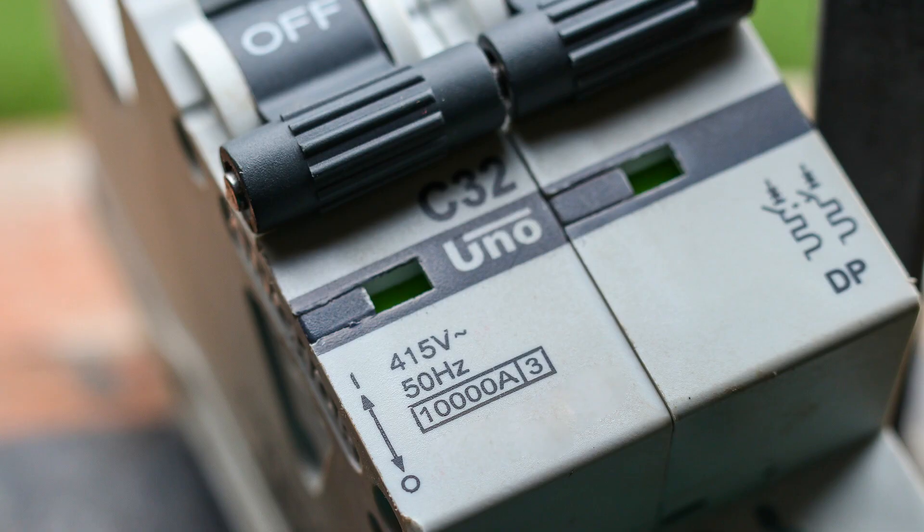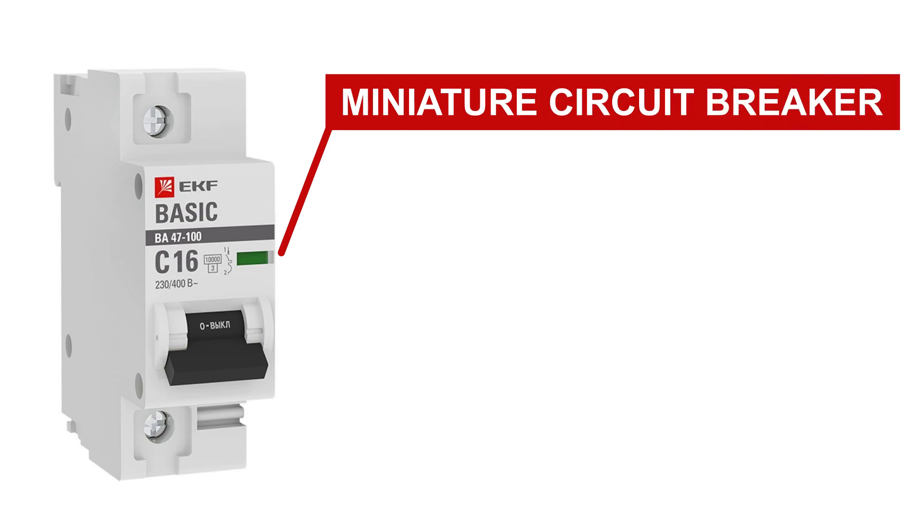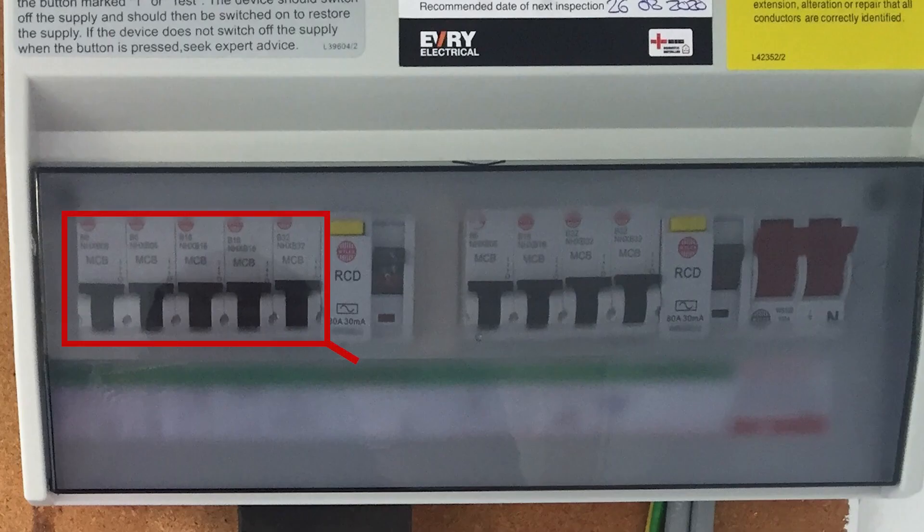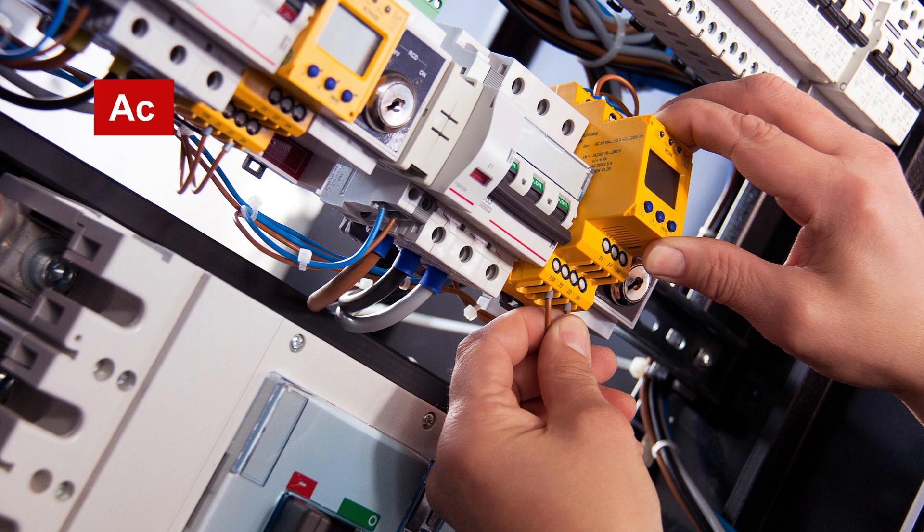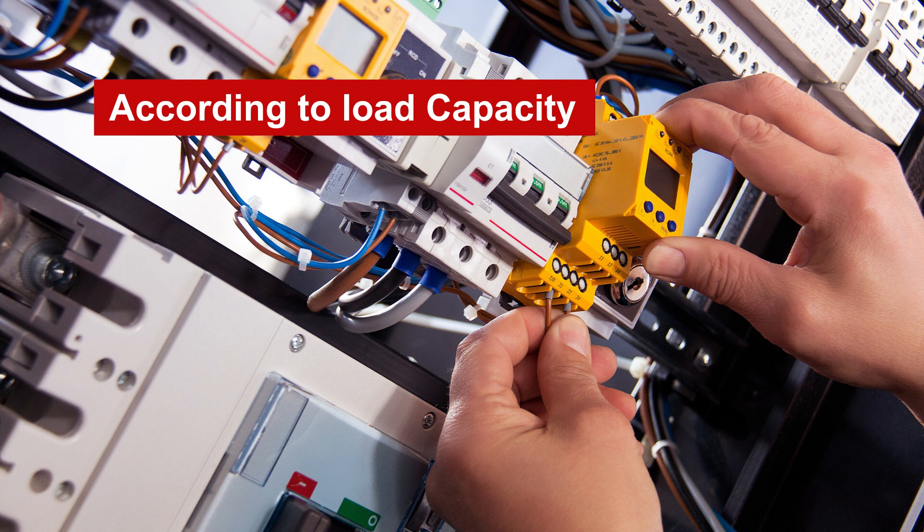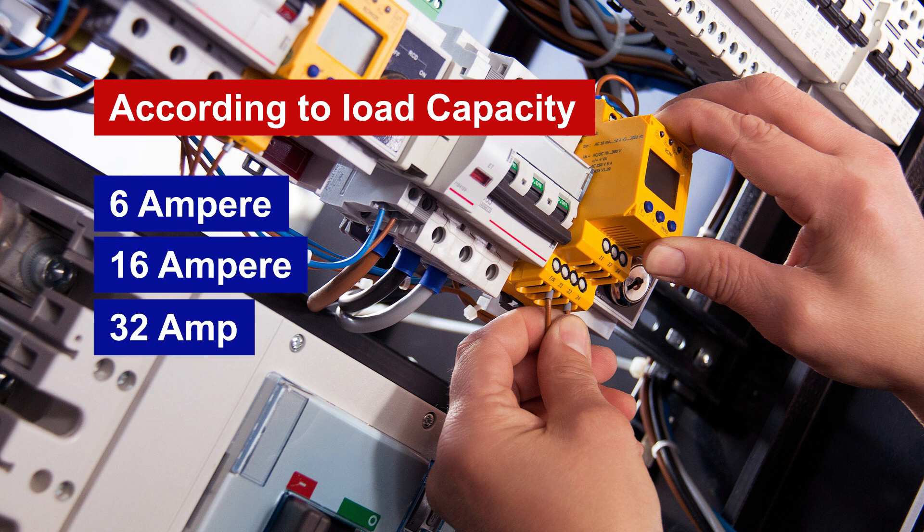A smart device that protects us from short circuits and overloads is called a miniature circuit breaker or MCB. At present day, every house has an MCB installed in the main line. According to the load, MCBs can be of many types, such as 6 ampere, 16 ampere, or 32 ampere.